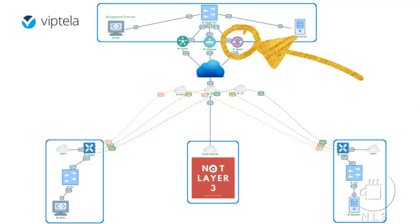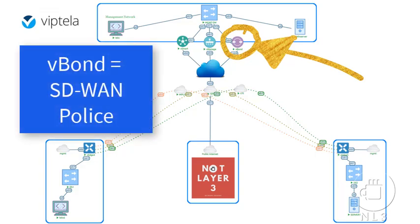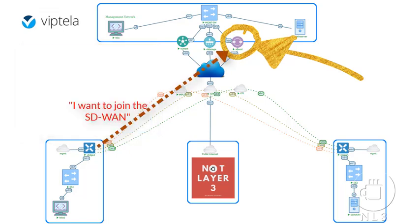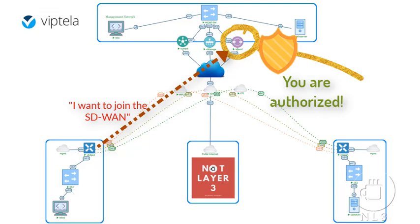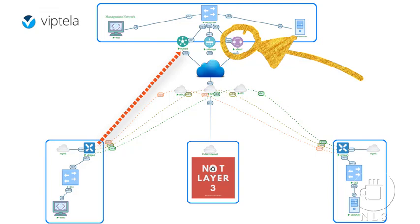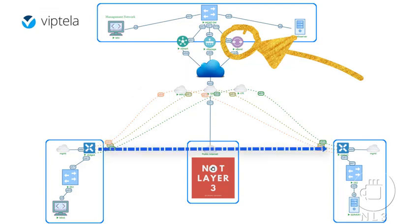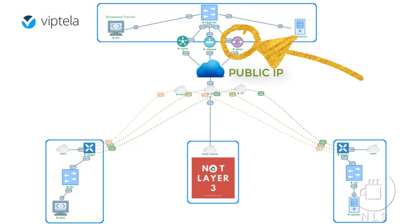Number two: the vBond. Think of vBond as the gatekeeper of your SD-WAN. The vBond orchestrator is a software module that authenticates the vSmart controllers and the vEdge routers in the overlay network and gets everyone talking. It needs to be a publicly reachable address so devices in the network can connect to it. It's the only Viptela device that must have a public address.